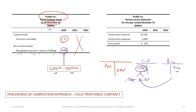On the income statement for 2020, we have construction revenue of $1,250,000 and construction expenses of $1,000,000, giving us gross profit of $250,000. That concludes the 2020 year.